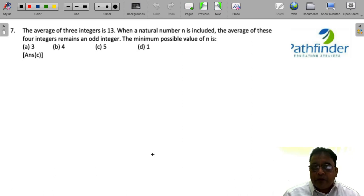CAT 2022, slot number 1, quantitative aptitude, question number 7. The average of 3 integers is 13. When a natural number n is included, the average of these 4 integers remains an odd integer. Then the minimum possible value of n is.